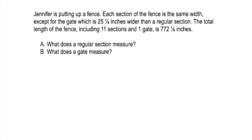Jennifer's putting up a fence. Each section of fence has the same width except for the gate, which is 25⅛ inches wider than a regular section. The total length of the fence, including 11 sections and one gate, is 772⅛ inches. What does a regular section measure? What does a gate measure?